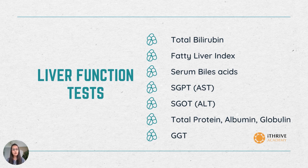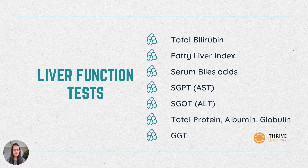Next is SGOT, that is serum glutamic oxaloacetate transaminase, also called ALT. This is also an enzyme made in the liver and can help you know about your liver function. Total protein measures the level of protein in the blood. The two main types of protein are albumin and globulin, and these are also tested as part of the liver function test.